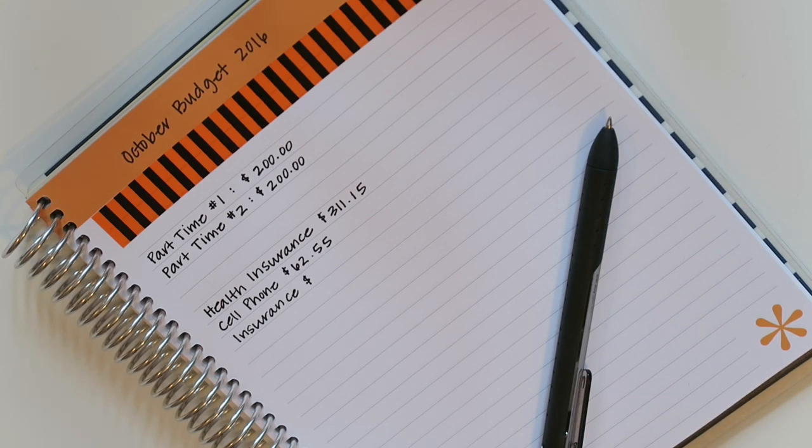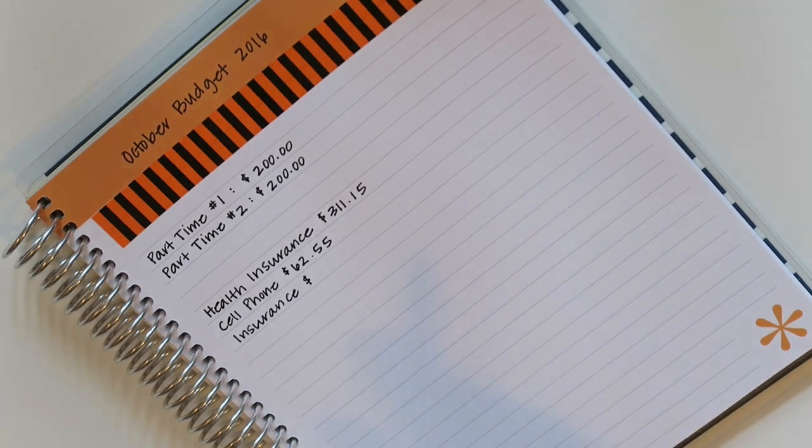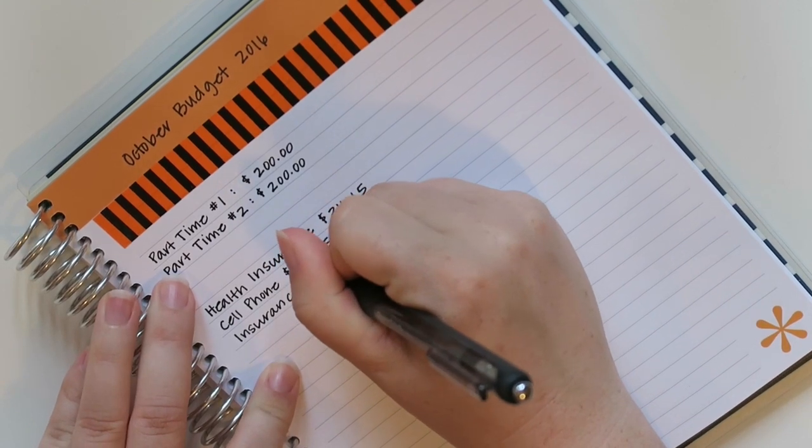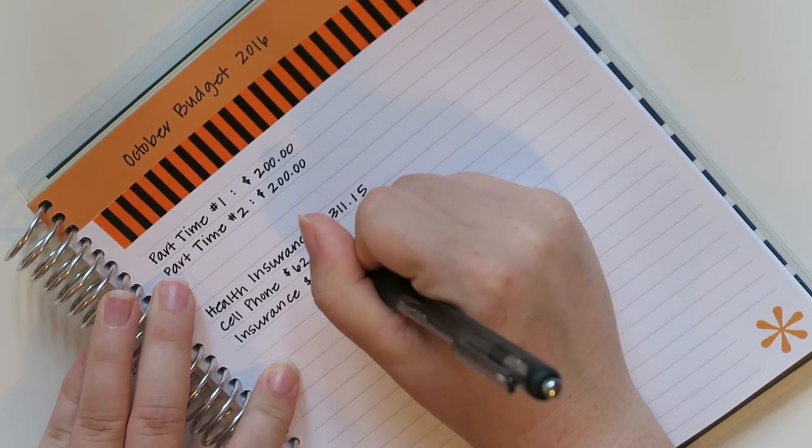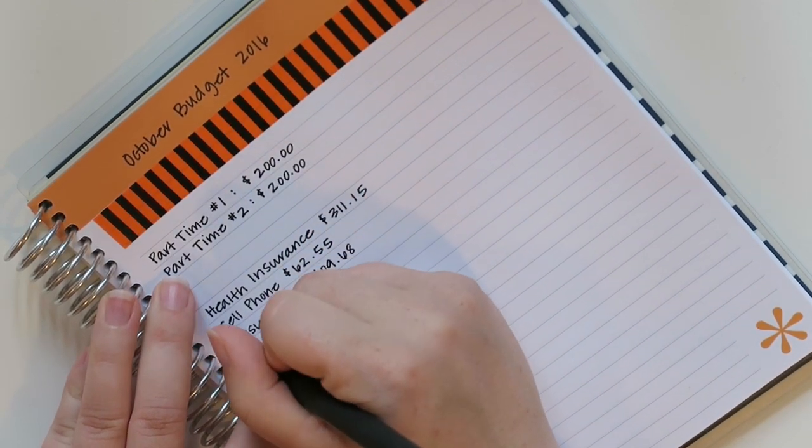It's like a hundred something every single month and sorry, I'm like kind of ill prepared a little bit ill prepared today. Okay. Let's see. Here we go. Reoccurring bill pay. All right. $109.68. All right.